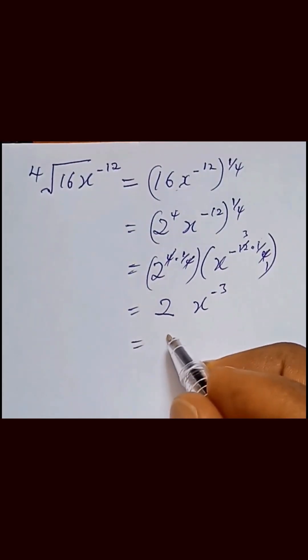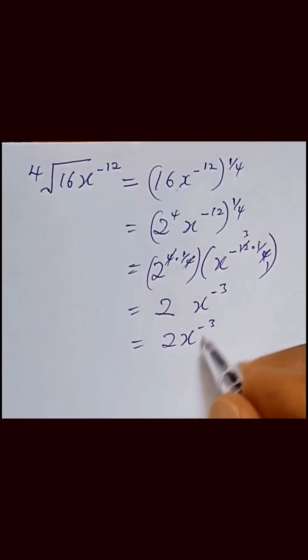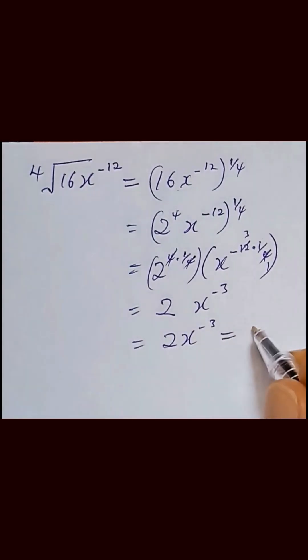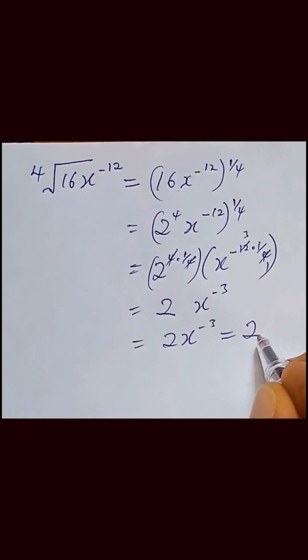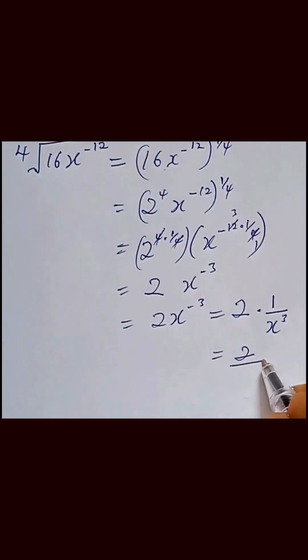And that will give us 2x raised to the power minus 3. Don't forget, this can also be expressed as 2 multiplied by 1 over x raised to the power 3, which is finally written as 2 over x raised to the power 3.